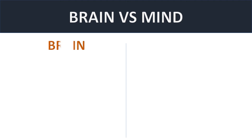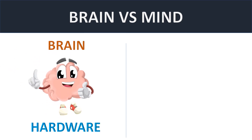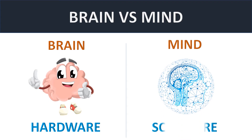Brain is hardware. Brain is the physical organ of the body, so we will call it the hardware of our human computer. Mind is nothing but the software of the human computer. Brain is hardware because it is a physical organ of the body. Mind is not visible — it is the software program of the human body. This is how we understand the difference between brain and mind.